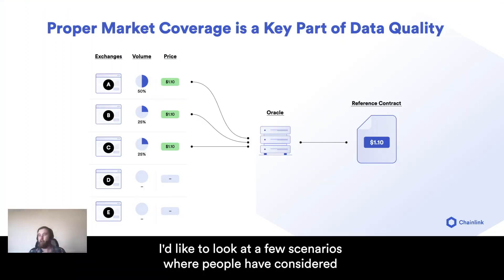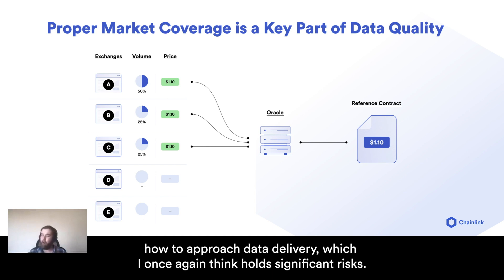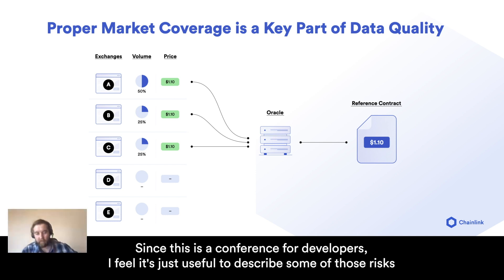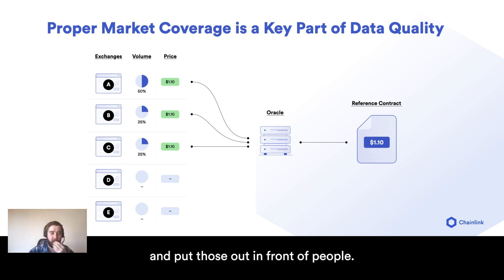I'd like to look at a few scenarios where people have considered how to approach data delivery, which I think holds significant risks. Since this is a conference for developers, I feel it's useful to describe some of those risks and put those out in front of people.